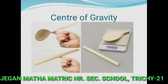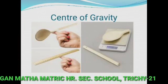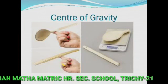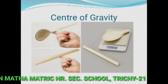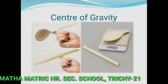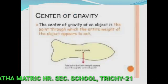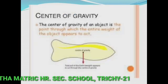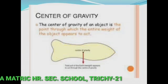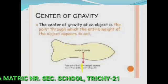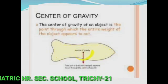The center of gravity of an object is a point through which the entire weight of the object appears to act. See the picture — the center of gravity is a point through which the entire weight of the object appears to act.